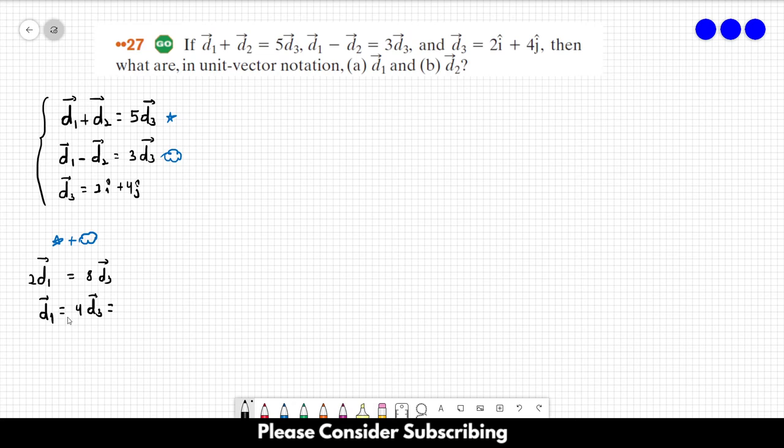Which is equal to, let's see, just 4 times this vector over here. 8i plus 16j. So this is the answer of letter a.